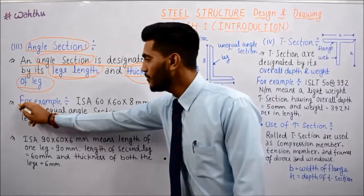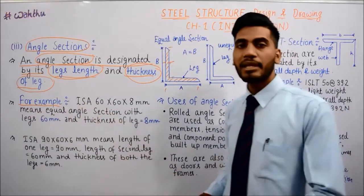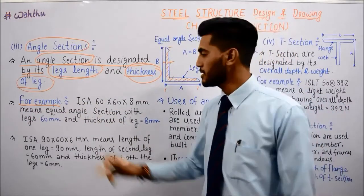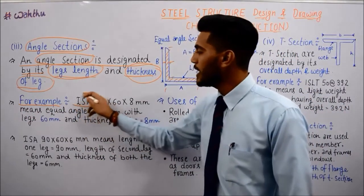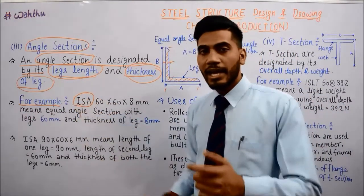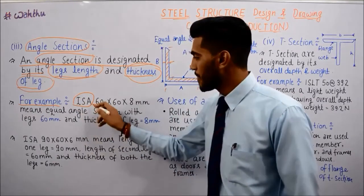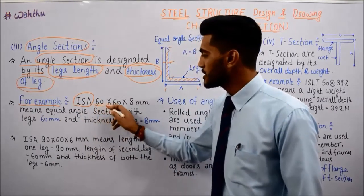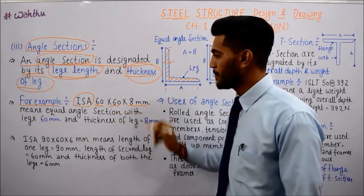For example, an Indian Standard Angle is designated as ISA 60, 60, 8mm — meaning leg lengths of 60mm each and thickness of 8mm.